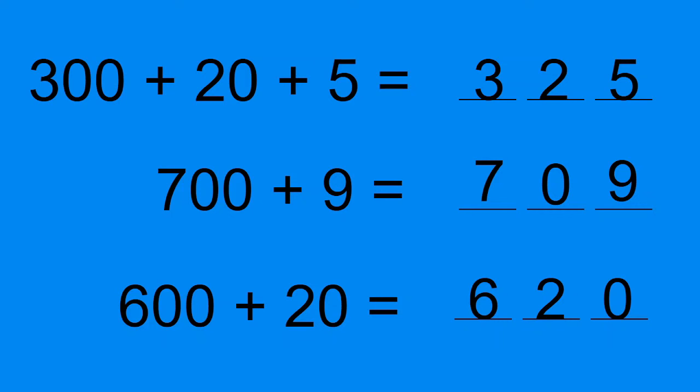Zero represents nothing. 600 plus 20 equals 620. Well done.